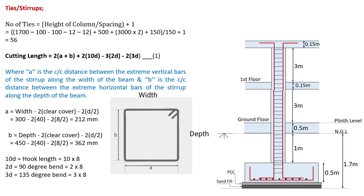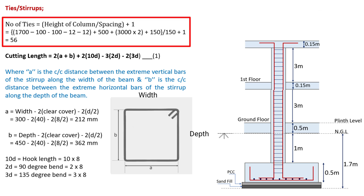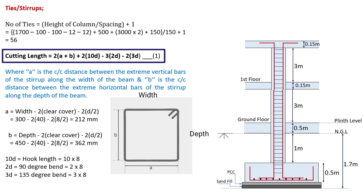Now let's do the calculations for lateral ties. First we need to calculate the number of ties, given by the formula: height of column divided by spacing, plus 1. The height of column equals excavation depth (1.7 m) minus sand filling (100 mm), minus PCC (100 mm), minus footing main bar, minus footing distribution bar, plus plinth height, plus floor to floor height × number of floors, plus slab thickness. Spacing is 150 mm. On substituting these values, the number of ties is 56.